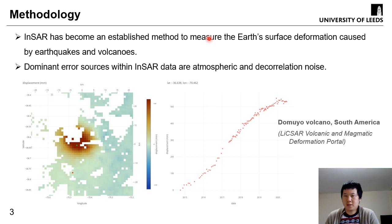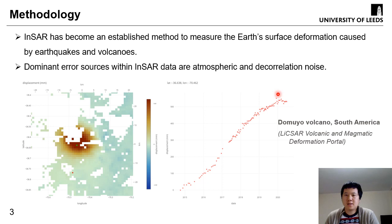The methodology we are going to use is a technique called InSAR. InSAR has become an exciting method to measure the Earth's surface deformation caused by earthquakes and volcanoes. The dominant error sources within InSAR are atmospheric and decorrelation noise. The left-hand figure shows an example from a South American volcanic region. We can see the cumulative displacement, and some pixels are missing due to decorrelation noise. Clicking a single pixel shows the time series on the right-hand side panel, where we can see a clear uplifting signal with some noise, mostly due to atmospheric noise.